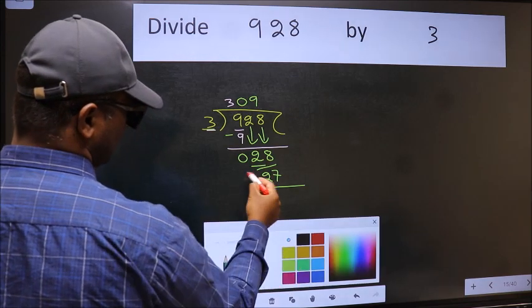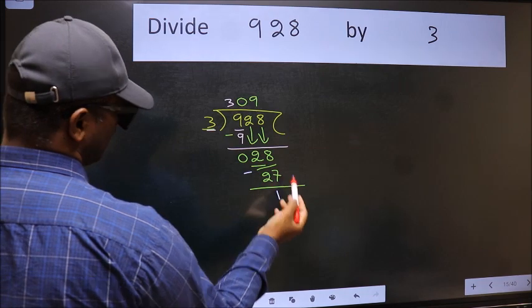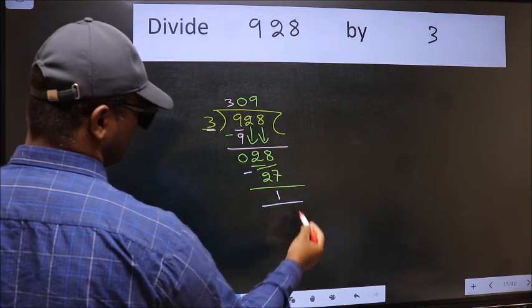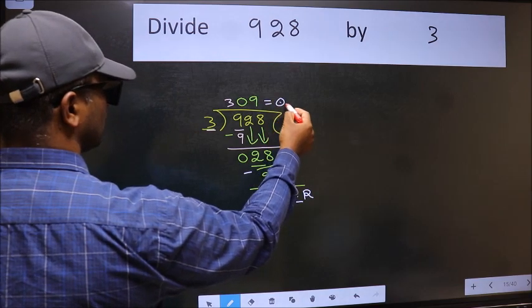Now we should subtract. We get 1. No more numbers to bring down. So we stop here. This is our remainder and this is our quotient.